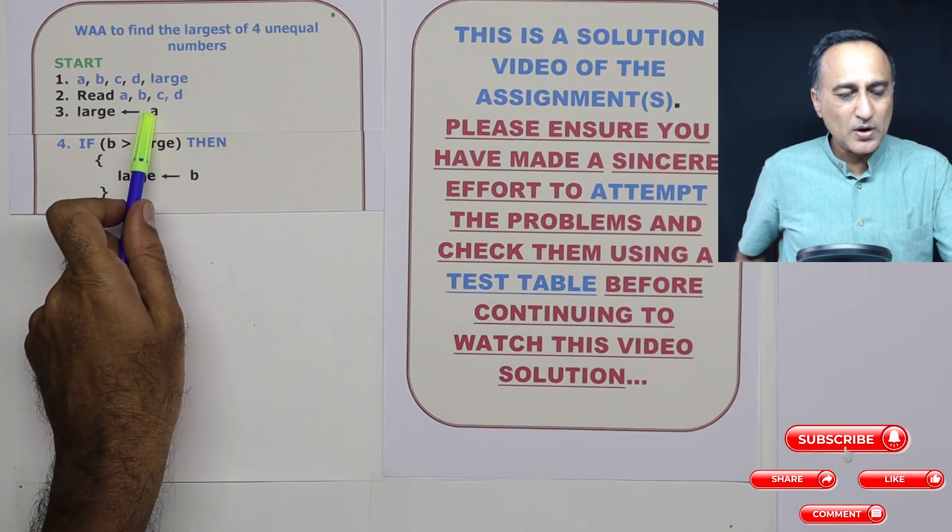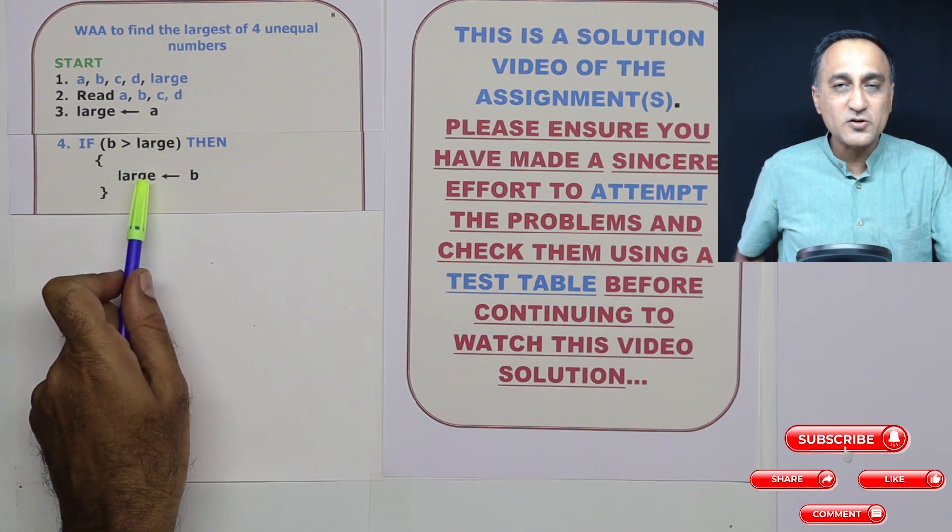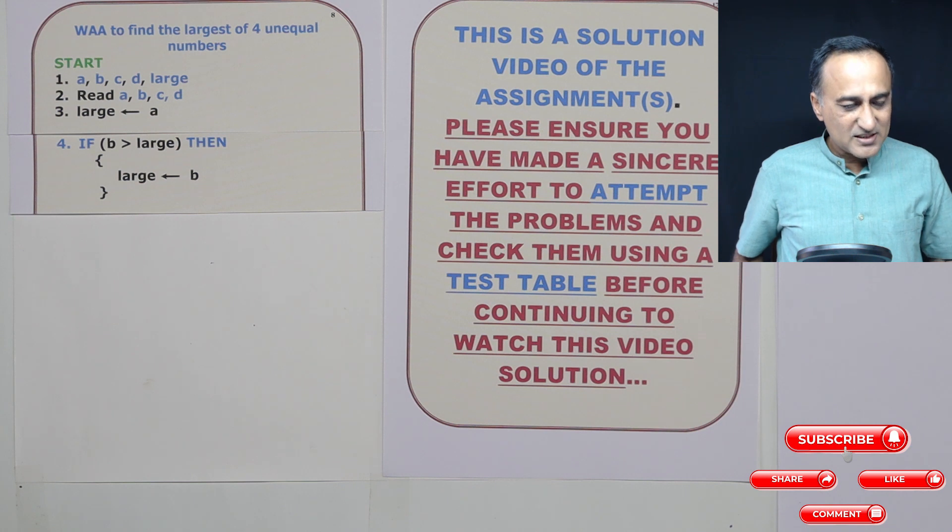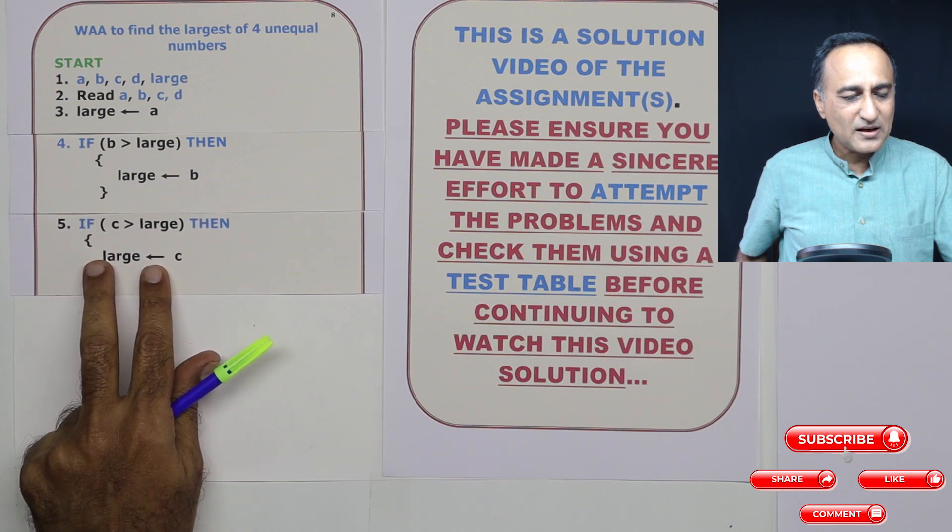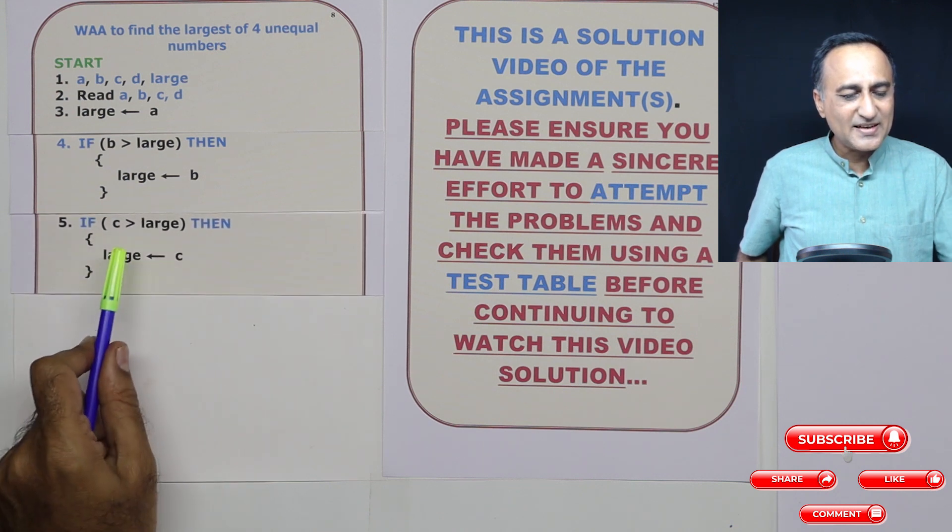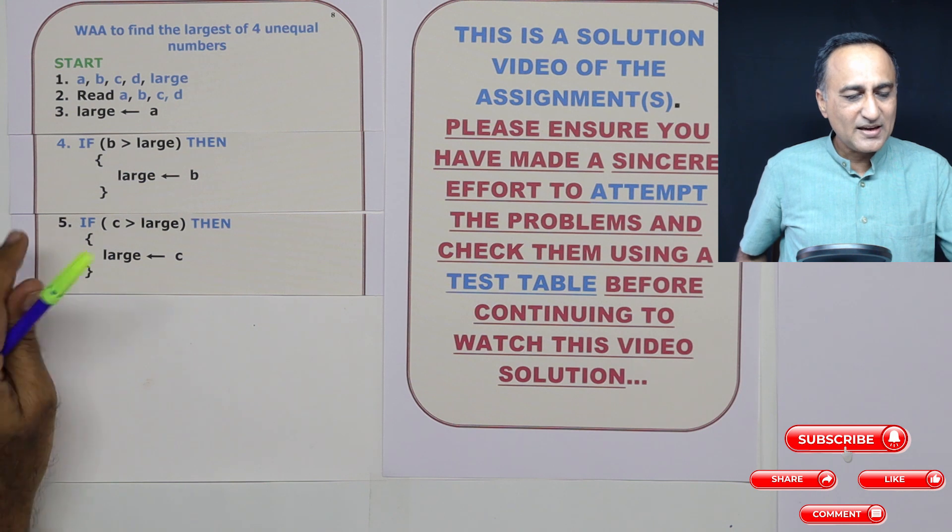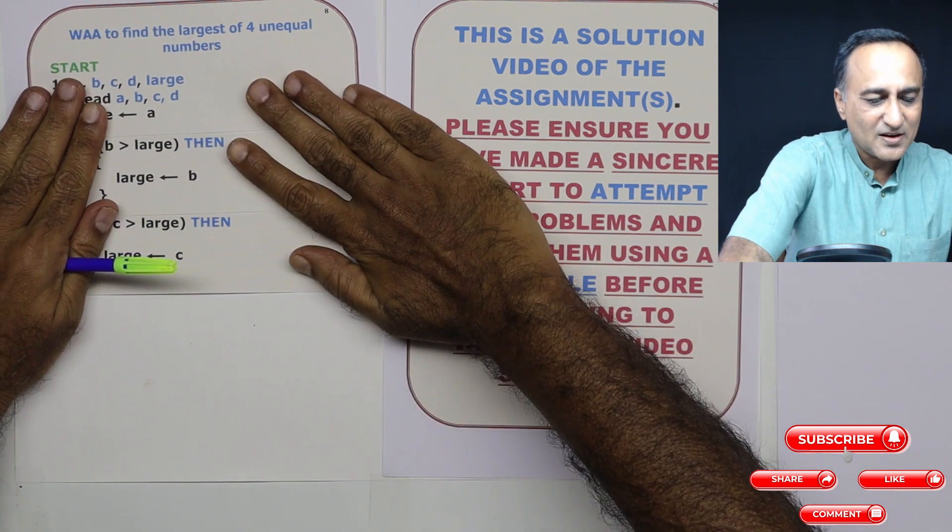Okay, suppose this was one and this was two, so now large would be two. In step number five, I'm just going to do something similar. I am going to compare C with large. So if C is greater than large, then I'm going to say large is C.